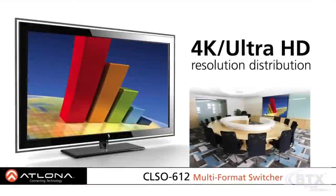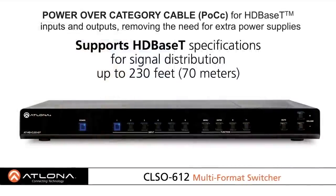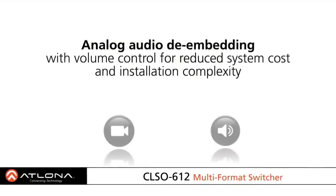The CLSO 612 multi-format switcher is also a scaler capable of distributing and upscaling 4K and Ultra HD resolutions. In addition, the CLSO 612 offers power over category cable for HDBaseT inputs and outputs, removing the need for extra power supplies. And for reduced system cost and installation complexity, the CLSO 612 features analog audio de-embedding with volume control.